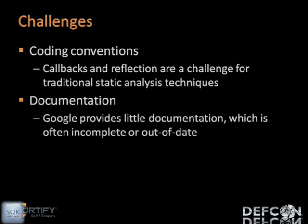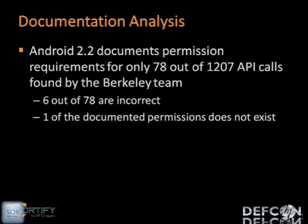Some challenges we had to overcome: coding conventions in the form of callbacks and Java reflection are pretty difficult to handle for traditional static analysis tools. Another big challenge is the documentation. I was personally shocked to see how little is documented, and somehow we're expecting developers to write secure Android applications. My colleagues at Berkeley, while doing analysis of overprivileged applications, found that Android 2.2 documents permissions for only 78 out of 1,207 APIs that the team identified. And in fact, six out of those 78 APIs were documented incorrectly — one permission mentioned didn't even exist.